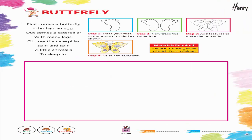Butterfly. First comes a butterfly who lays an egg. Out comes a caterpillar with many legs. See the caterpillar spin and spin a little chrysalis to sleep in. Step 1: Trace your foot in the space provided as shown. Step 2: Now trace the other foot. Step 3: Add features to make the butterfly. Step 4: Color to complete.